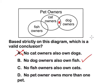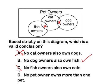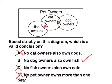But let's go on and look at the other two answers for fun. C — no fish owners also own cats. That means the fish owner's bubble better not be touching the cat owners. But it does, which means this is a false statement. And the last one: no pet owner owns more than one pet. Well, that's just ridiculous because we can see in the diagram all of the bubbles touch at least one other bubble. Thank you.